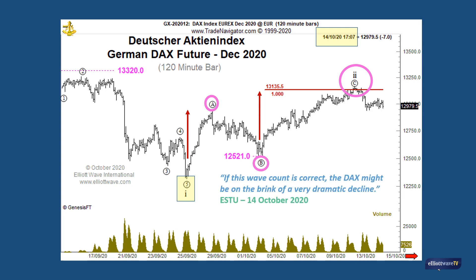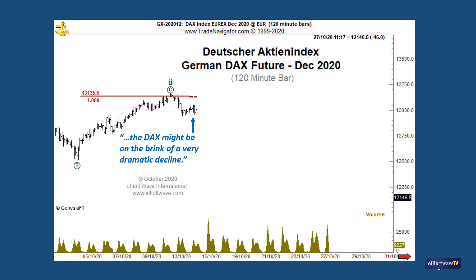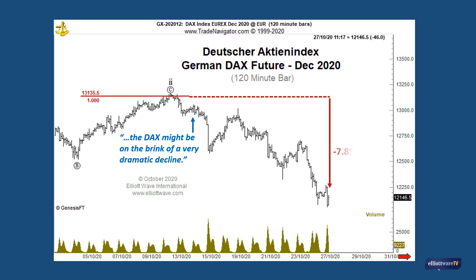As we noted on that day's update, if this wave count is correct the DAX might be on the brink of a very dramatic decline. Since the 14th of October the DAX has indeed declined precipitously, falling more than seven percent over the next nine trading days, and at this juncture further dramatic declines cannot be ruled out. You can be sure that the European short-term update will be on top of every twist and turn. As you can see, the guideline of corrective wave equality can sometimes be very powerful. Stay tuned to elliottwave.com to learn more about the wave principle and to help you navigate the financial markets.